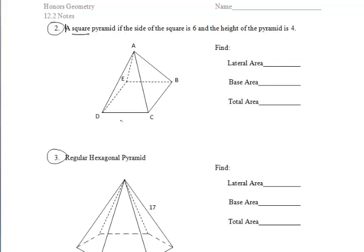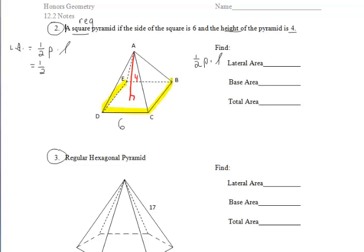For number two, you should recognize that this is a square pyramid, so it indeed is a regular pyramid. To find the lateral area, we can do one-half of the perimeter of the base times the slant height, which gives us the areas of our triangles. Working with the perimeter of our base, we know that each side is six, so our perimeter is 24.